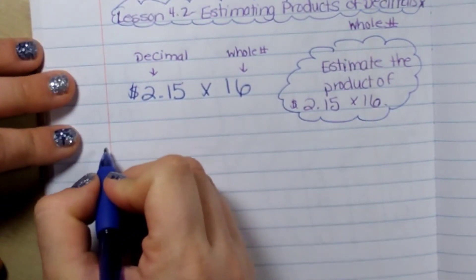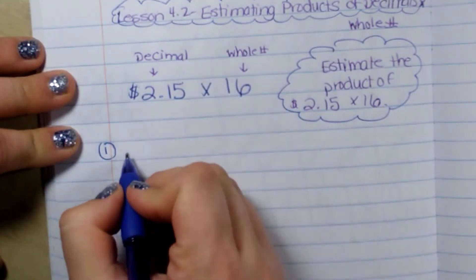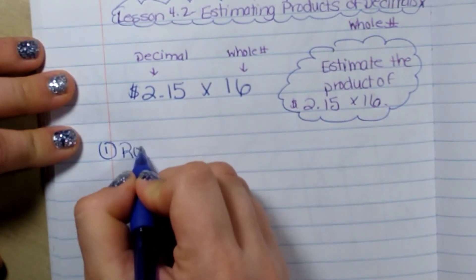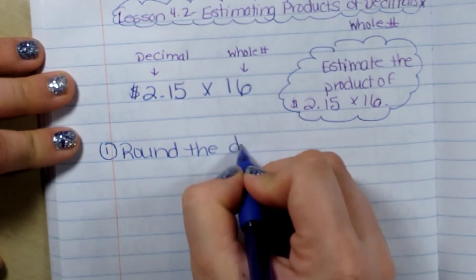Step one: round the decimal to the nearest whole number.